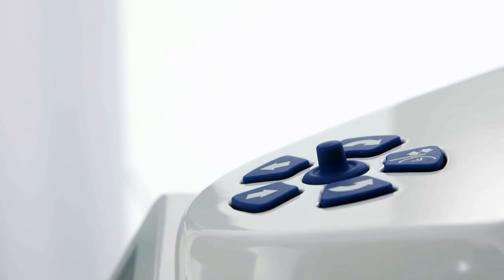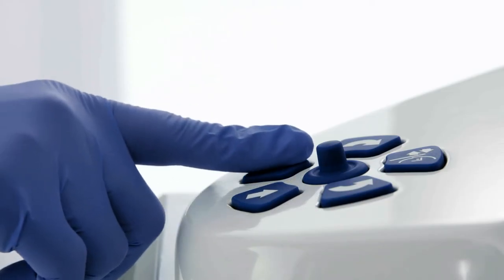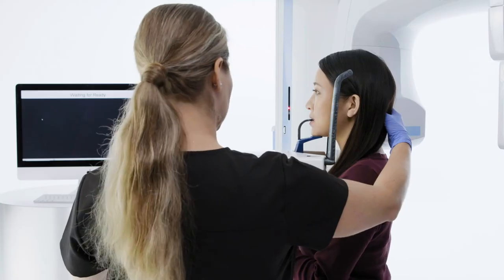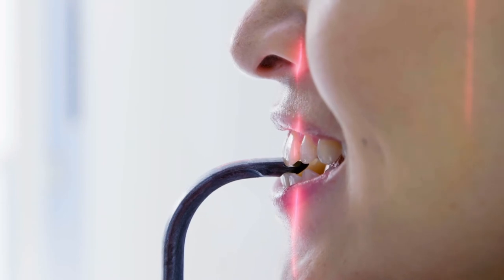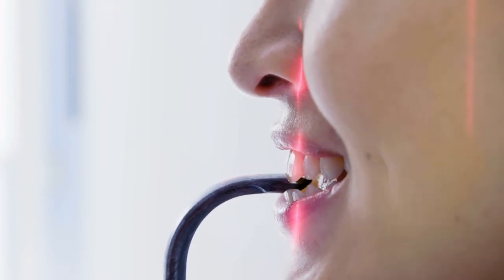To begin the positioning process, adjust the height of the unit until the chin rest is even with the patient's chin. Instruct the patient to bite on the bite stick and visually verify the upper and lower anterior teeth are in the grooves.